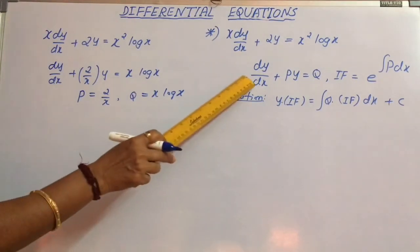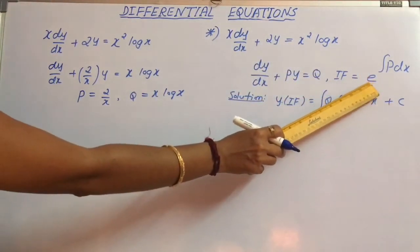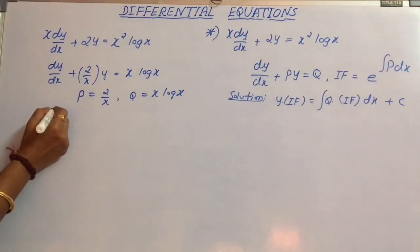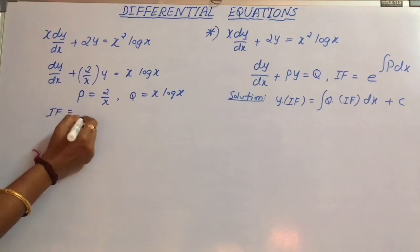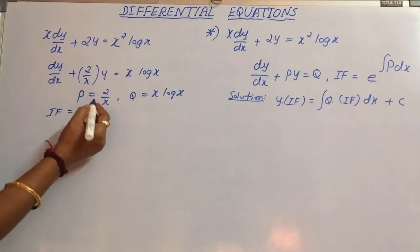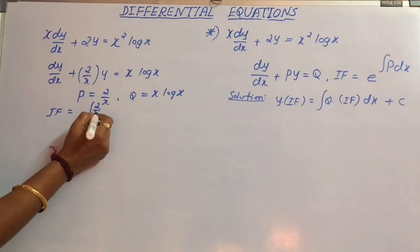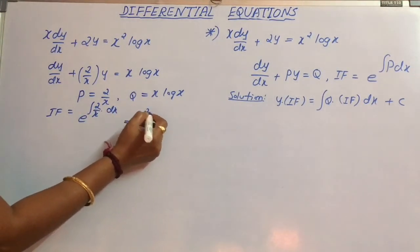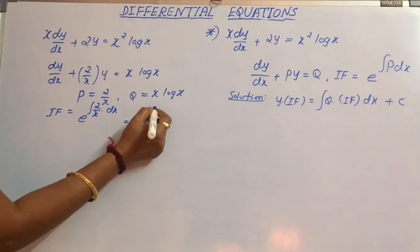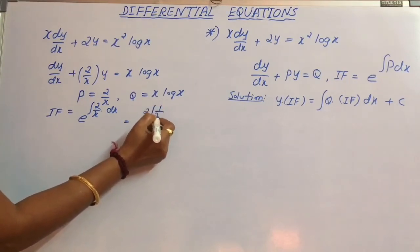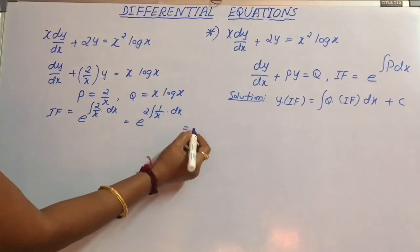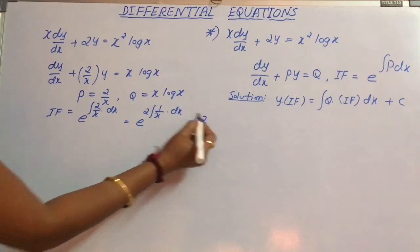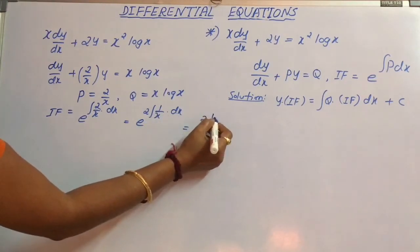For this differential equation, the integrating factor is e to the power of the integral of P dx. Therefore, the integrating factor equals e to the power of the integral of (2/x) dx. Taking 2 as the constant outside, the remaining part is the integral of (1/x) dx, which gives e to the power of 2 log x.